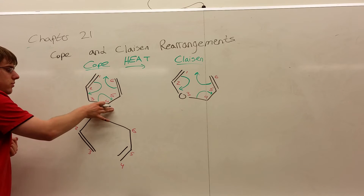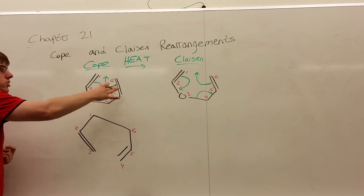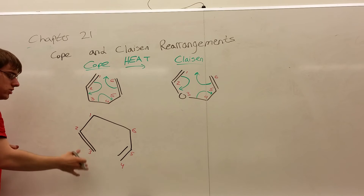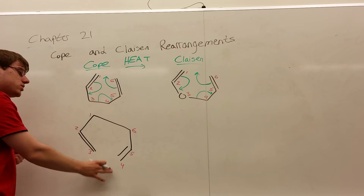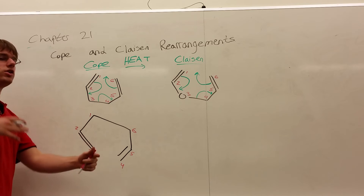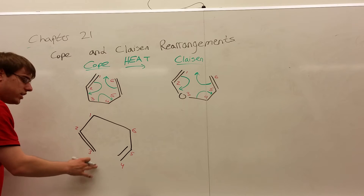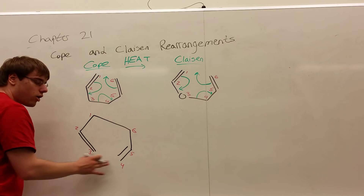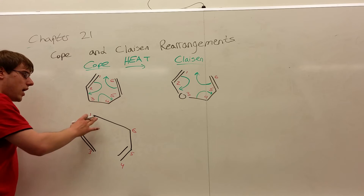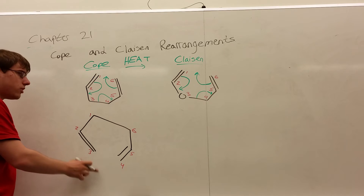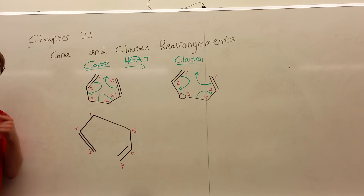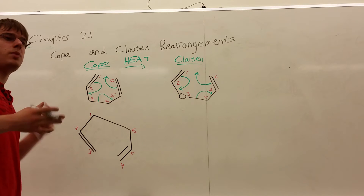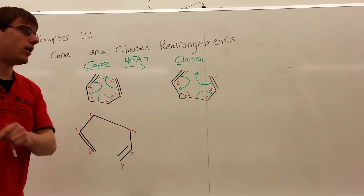Notice, we kind of ended up with the same thing we started with — a six-carbon chain with two double bonds at the end. So what changed? The position of the carbons. We rearranged who is connected to what. At the end of this rearrangement, three and four are no longer connected to each other, and now one and six are. Also, the carbons that are part of the double bond have changed. So numbering your carbons in this question is always very important, because that's usually the basis of the question — where does this specific carbon end up?